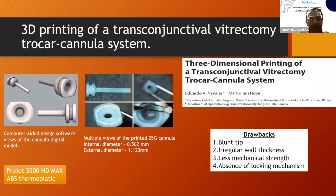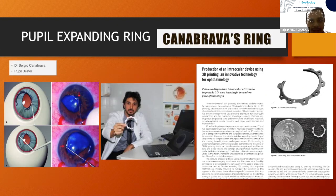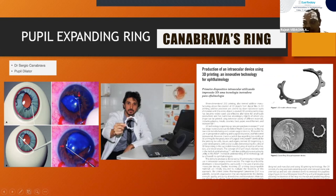Namjas tried to 3D print a vitrectomy trocar cannula system, but used PLA material and was not able to achieve results as good as a normal surgical instrument. Kenebrava has 3D printed a pupil expander, and here you can see the pupil expander and how it is used in surgery for small pupils.